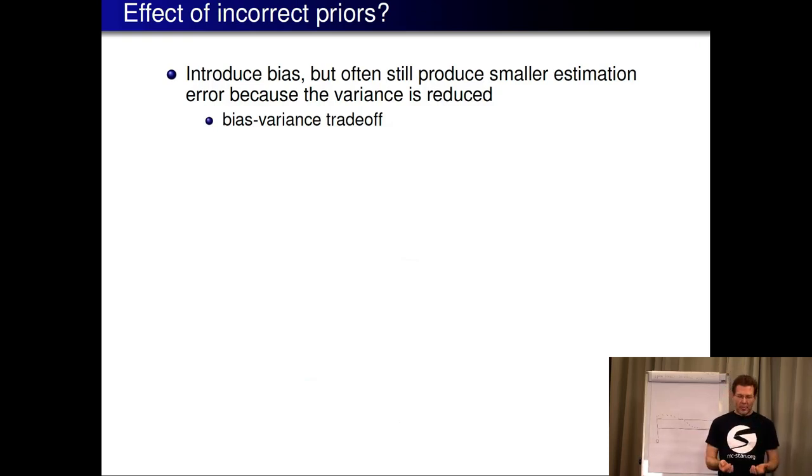People are sometimes worried that what if the prior is wrong what if we came up with the wrong prior. Yes it introduces bias but it's often still produces smaller estimation errors because the variance is reduced. There's a bias variance trade-off so it's often better to use some information even if it might be a bit wrong from the true nature because it still makes your predictions better.